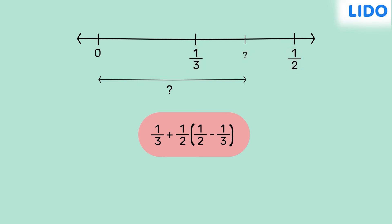And this applies to any two rational numbers. If we replace 1 third with a rational number a and half with another rational number b, then we can generalize this result as a plus half multiplied by b minus a. And because a and b are rational numbers,